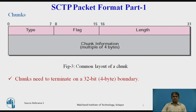Control information or user data are carried in chunks. Chunks have a common layout as shown in the figure. The first three fields are common to all chunks, while the information field depends on the type of chunk. SCTP requires the information section to be a multiple of 4 bytes. If not, padding bytes of 8 zeros are added at the end. Chunks must terminate on a 32-bit, that is 4-byte, boundary.